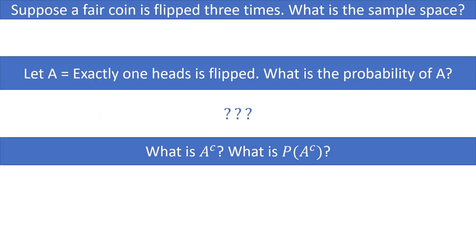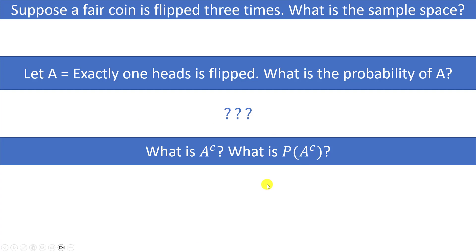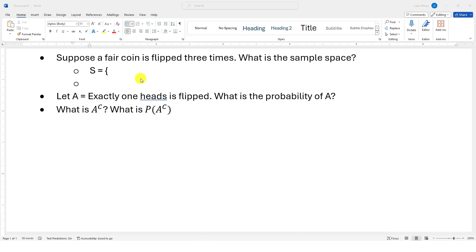Here's one for you to try: suppose a fair coin is flipped three times. What is the sample space? Hint: there are 8 outcomes, one of which is HHH. Let A represent the event where exactly one heads is flipped — what is P(A)? Also, describe A^c and find P(A^c). Pause the video and give these a shot.